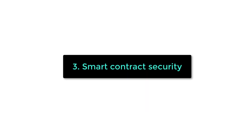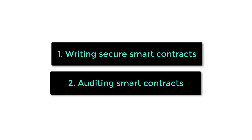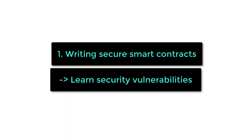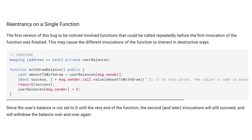The next step is to learn smart contract security. There are two aspects: writing secure smart contracts, where you defend your code against hackers, and auditing smart contracts, where you try to attack a smart contract and find vulnerabilities. To get started, you can focus on writing secure smart contracts, and you need to learn the most common security vulnerabilities — for example, the re-entrancy attack and overflow and underflow.